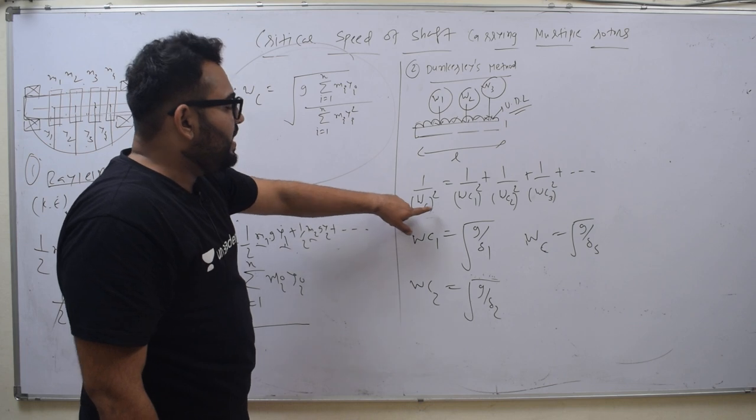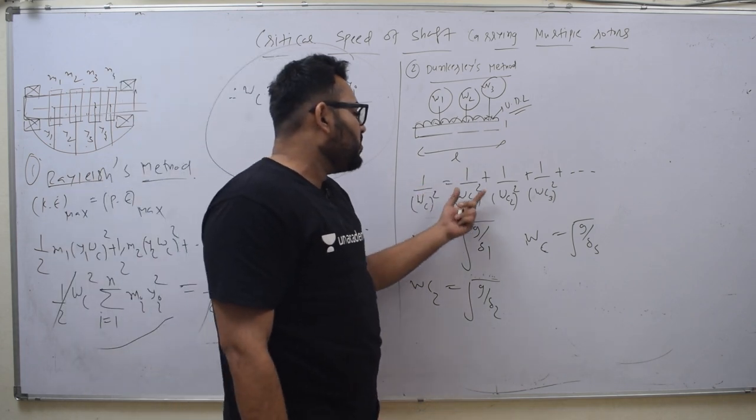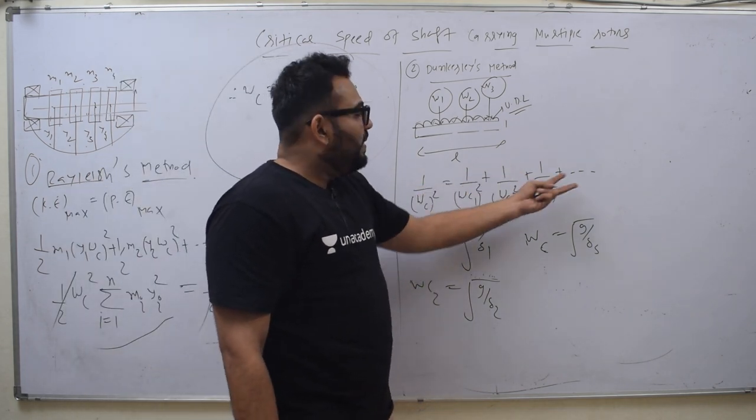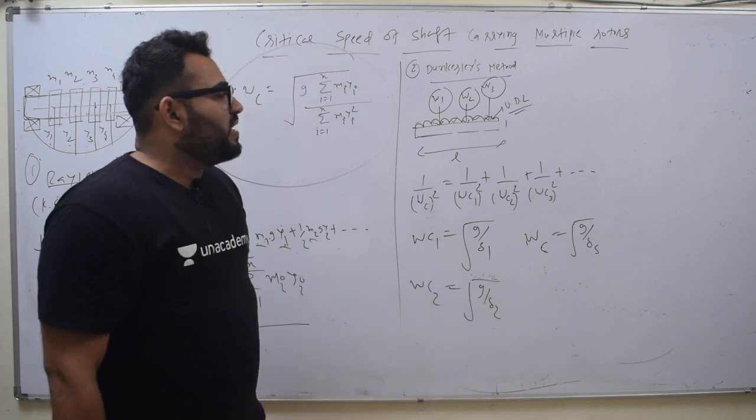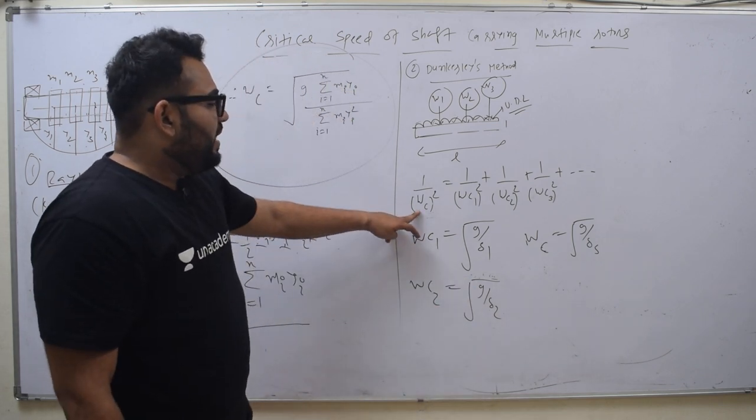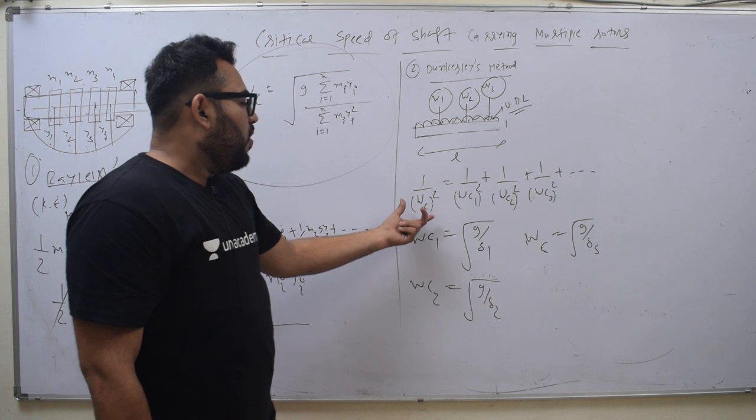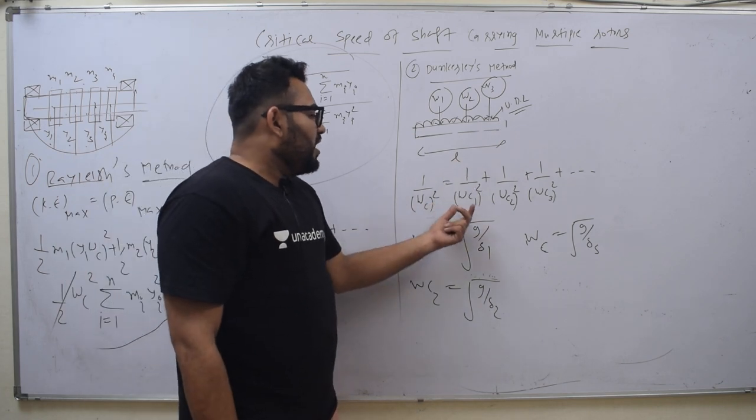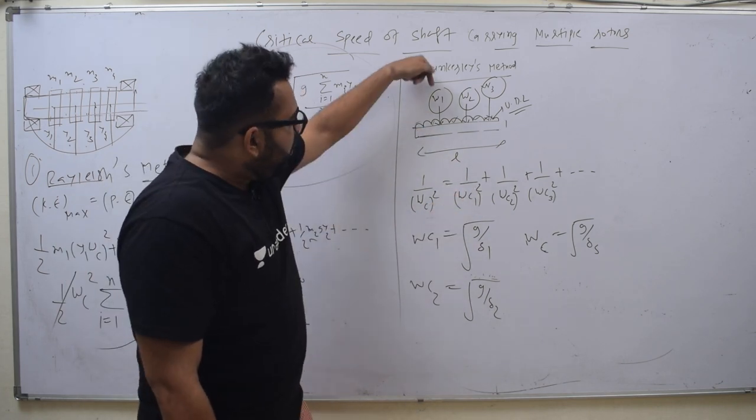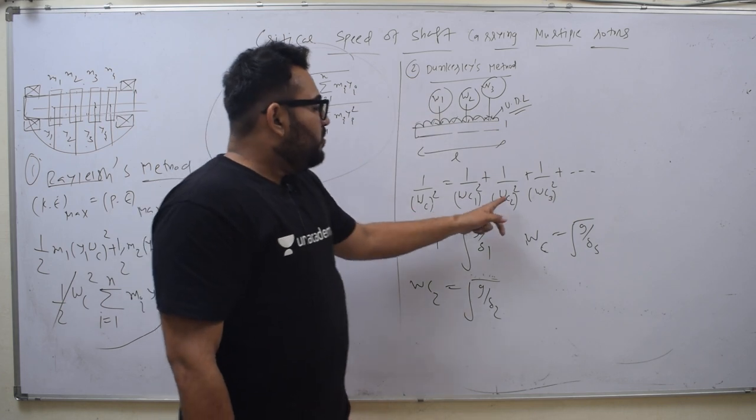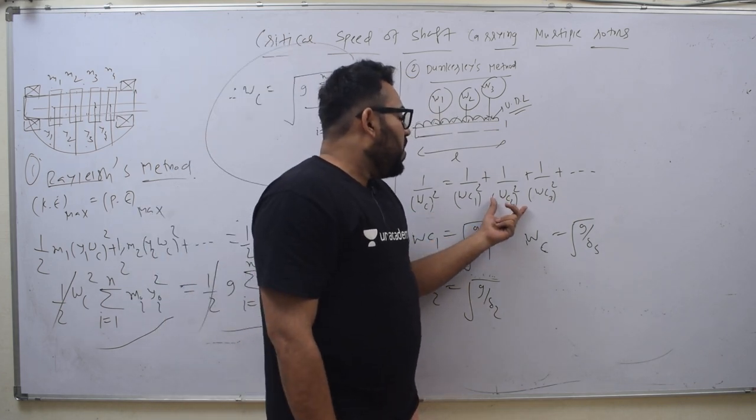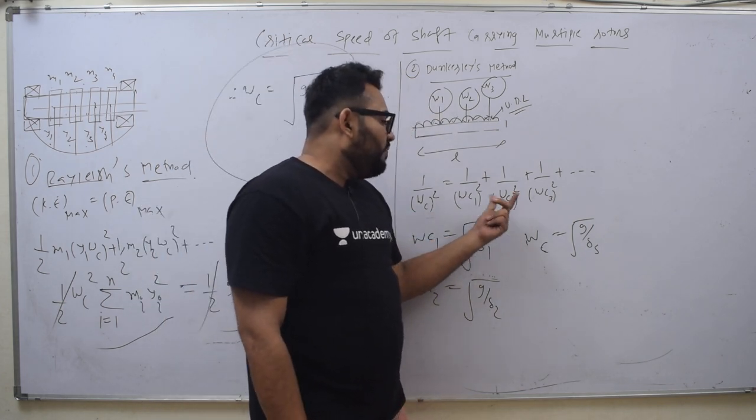According to Dunkerley's method, one upon omega C square equals one omega C1 square plus one omega C2 square, plus so on for any point loads you can write. So omega C is critical speed of whole shaft. Omega C1 means critical speed of shaft due to point load 1. Omega C2 means critical speed of shaft due to point load 2.